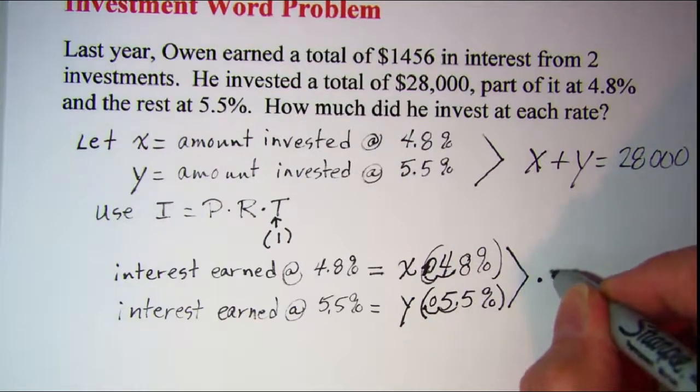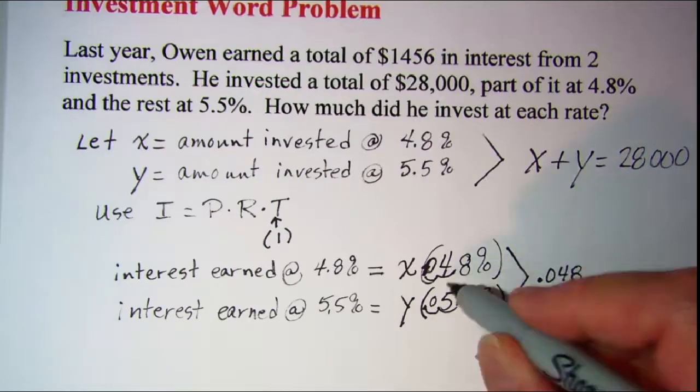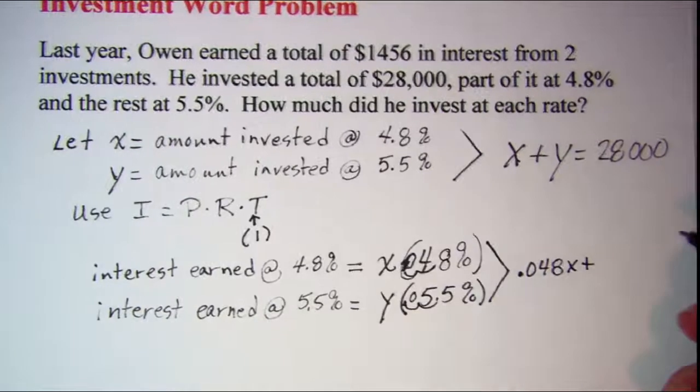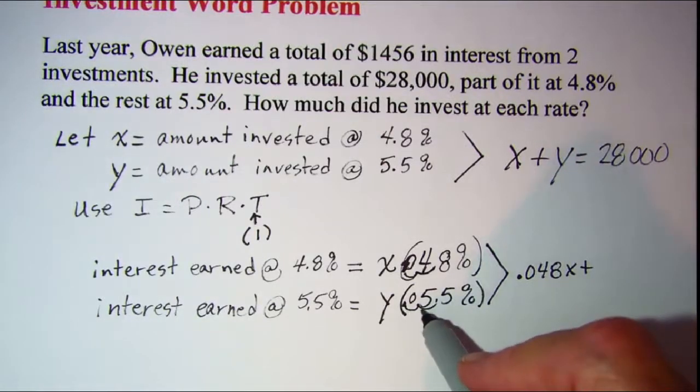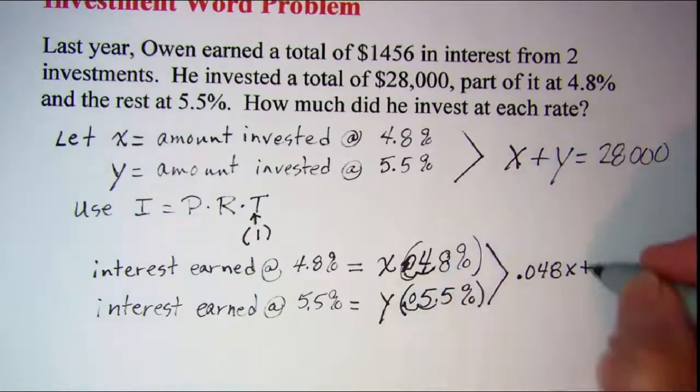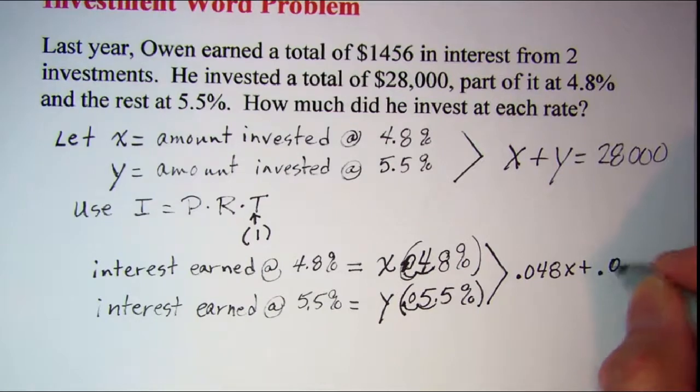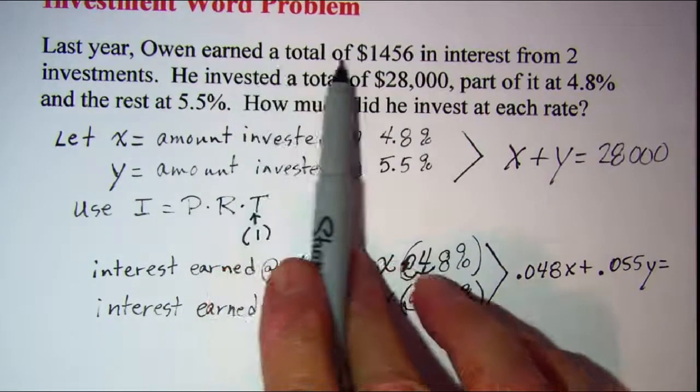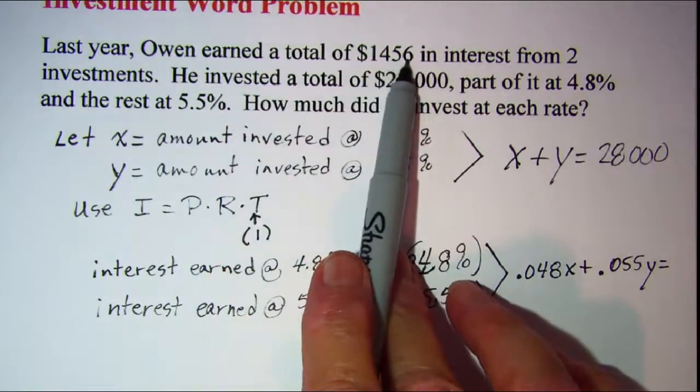So the two together, 0.048 times x added to 0.055 times y equals the total interest earned which was $1,456.